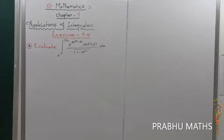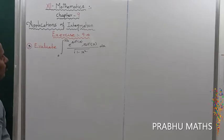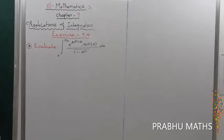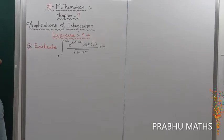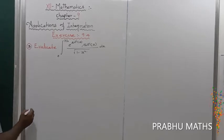x is 9.4, third sum. Evaluate the integral from 0 to 1 by root 2 of e to the power of sin inverse x, multiplied by sin inverse x, divided by root of 1 minus x squared, into dx.